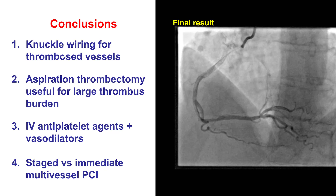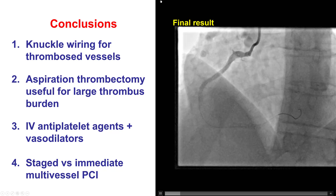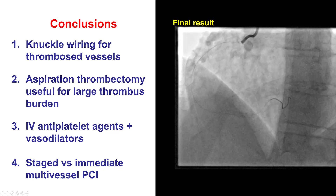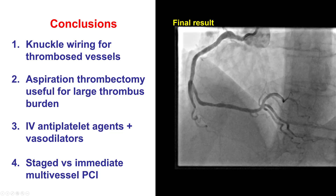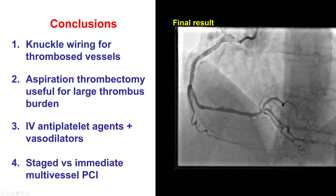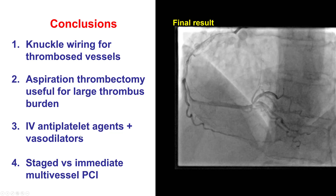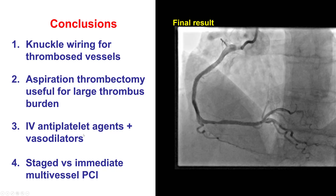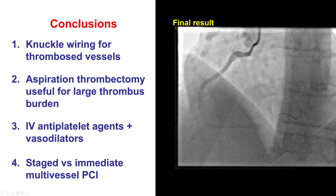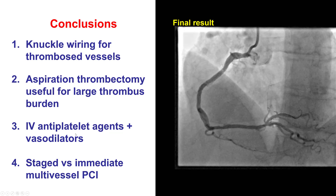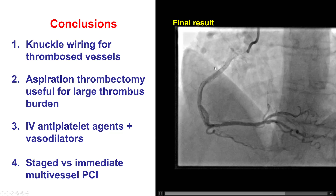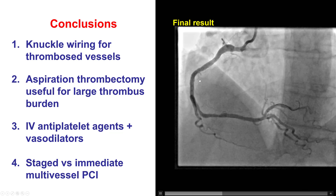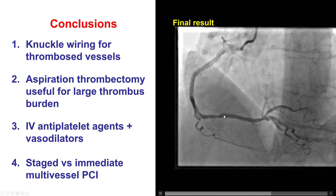Third, in cases with large intracoronary thrombus, administering antiplatelet agents such as eptifibatide, tirofiban, or cangrelor, or administering vasodilators, can help prevent thrombus propagation and help dilate the vessel.